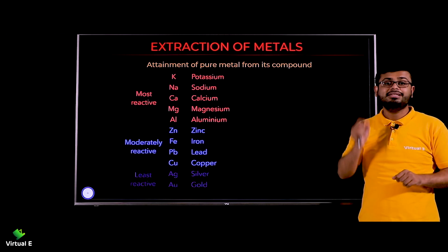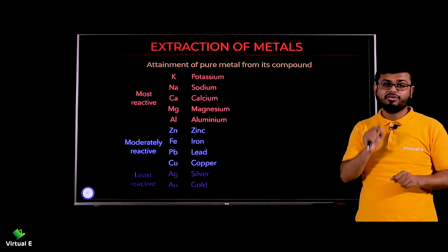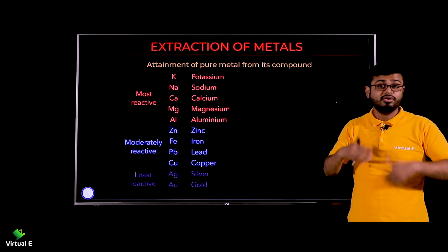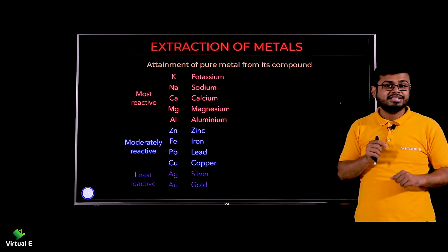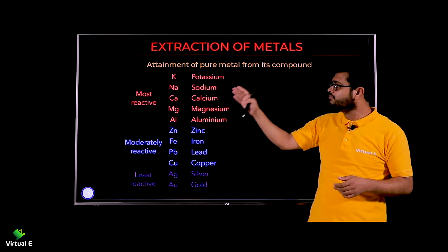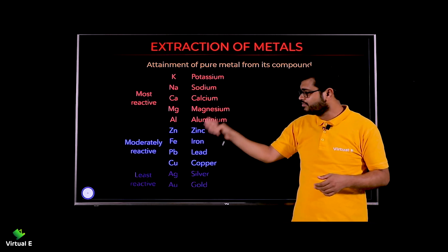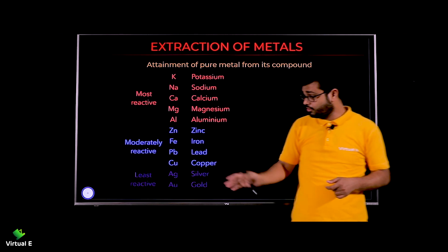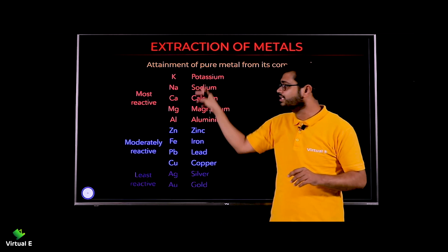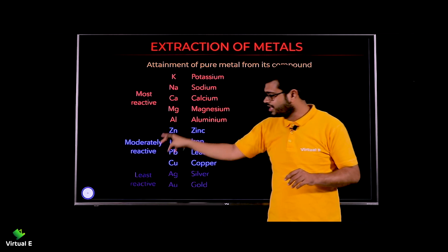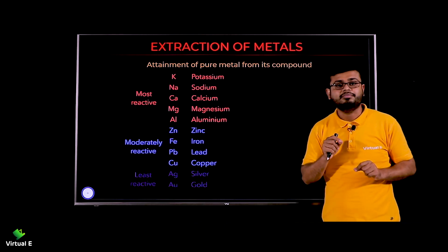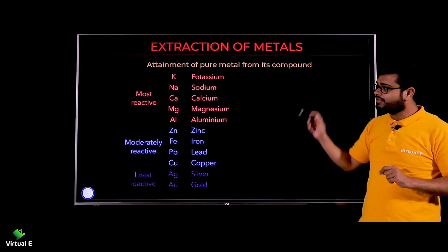Now we need to keep in mind the reactivity series, which we studied in the last topic. As we are discussing metals, we will obviously talk about the reactivity series. From top to bottom: sodium, potassium, calcium, magnesium, aluminium, zinc, and finally gold at the last. There are categories: highly reactive metals at the top, moderately reactive in the middle, and least reactive at the bottom.